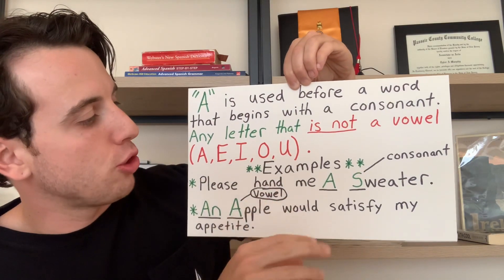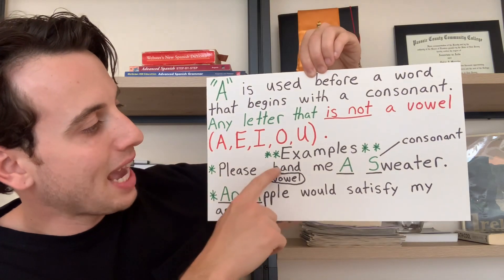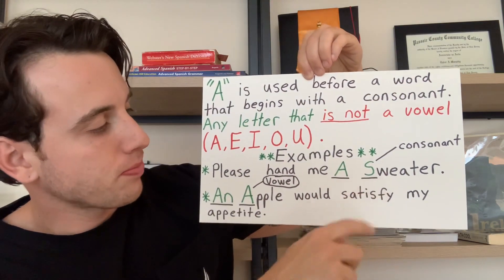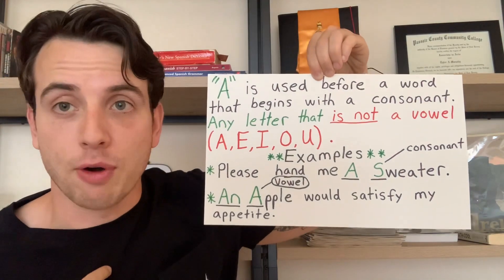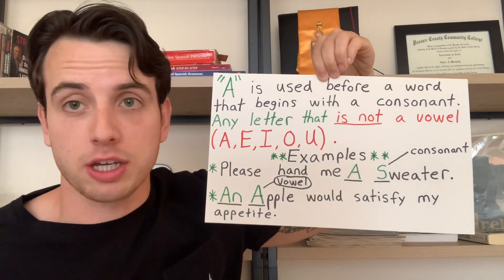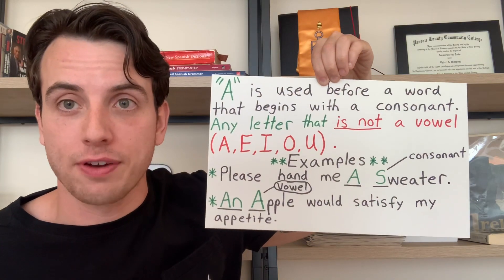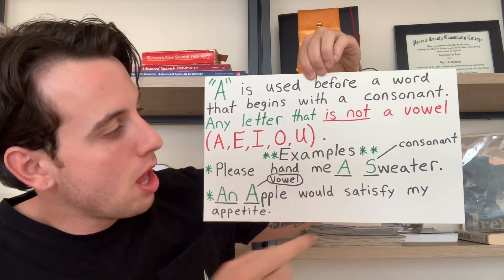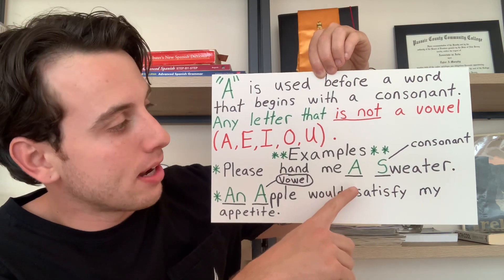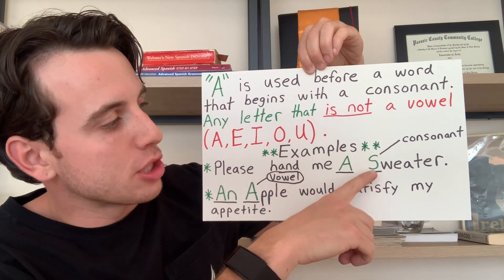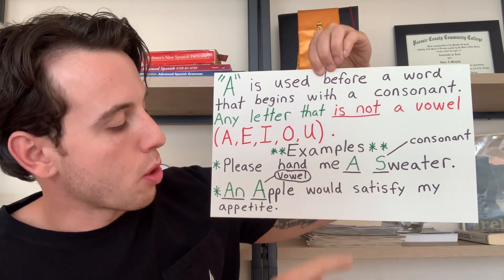Some examples for the two indefinite articles. Please hand me a sweater. This sentence implies that I'm not asking for any specific sweater — any sweater will do, so it's indefinite or speaking in general. The reason we use 'a' instead of 'an' is because 'sweater' begins with an S, which is a consonant, so you would say 'a sweater.'